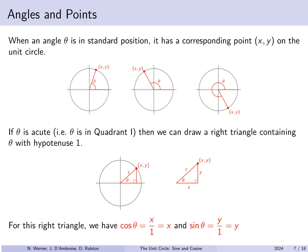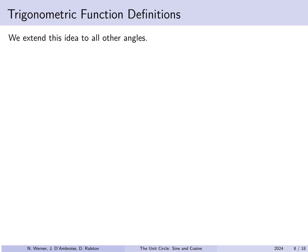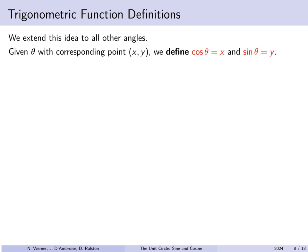For this right triangle, cosine of theta is the ratio of the adjacent side to the hypotenuse — x over 1 — but since the hypotenuse is 1, that's just x. Similarly, the sine of theta is y over 1, or just y. So if we are in quadrant 1 and we make our angle theta correspond to a point (x, y) on the unit circle, the cosine of the angle is the x-coordinate of that point and the sine of the angle is the y-coordinate of that point.